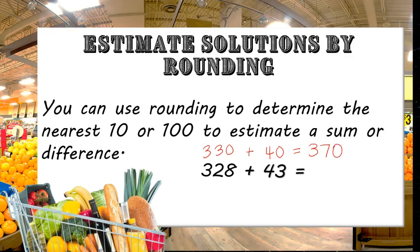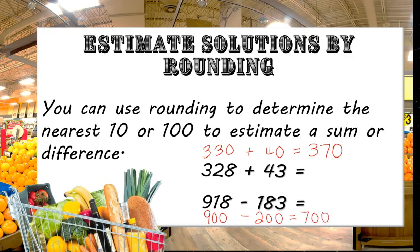So that means 328 plus 43 is about 370. Let's try 918 minus 183. We could round 918 to 900, and then round 183 to 200. Then if we subtract 900 minus 200, we get 700.